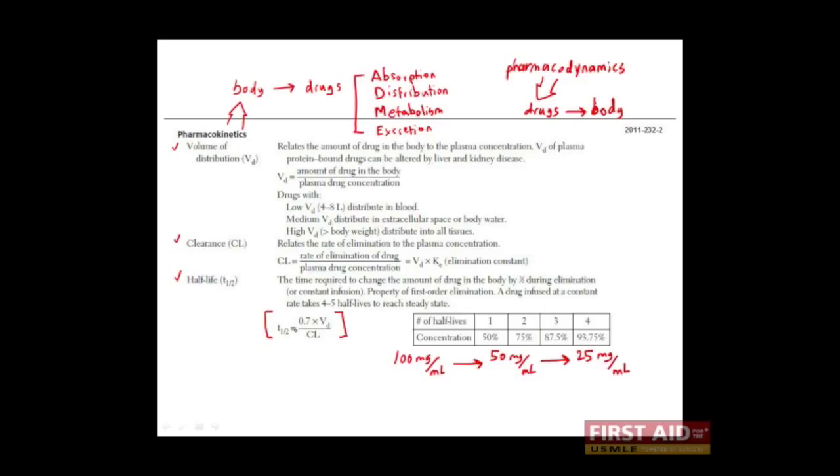The half-life equals a coefficient of 0.7 times the volume of distribution for that drug over the clearance. Remember that half-life is given in units of time. Let's quickly work that out to prove to ourselves that this equation is true.